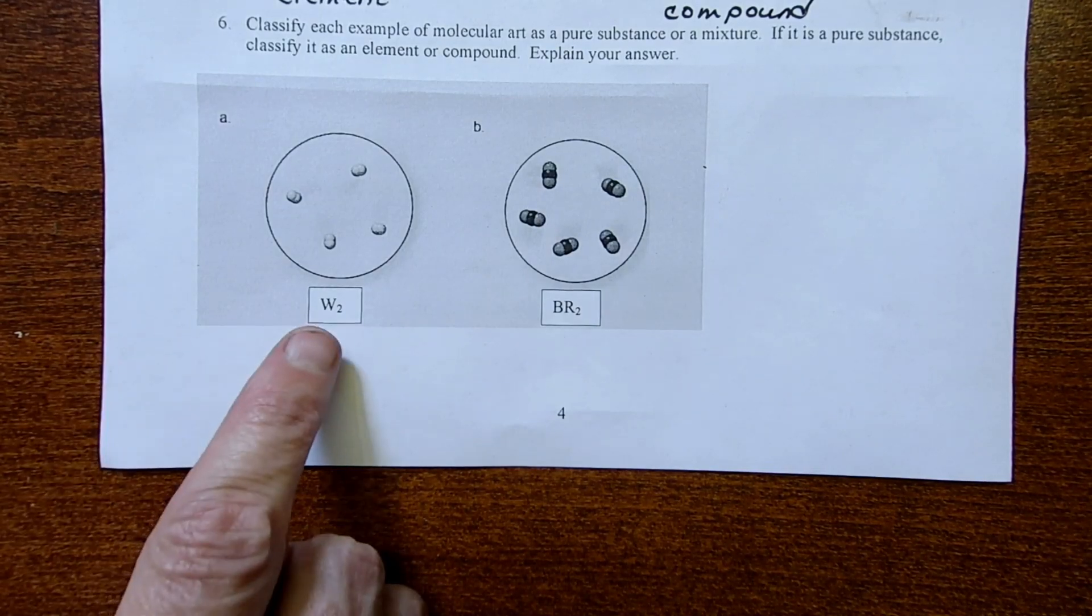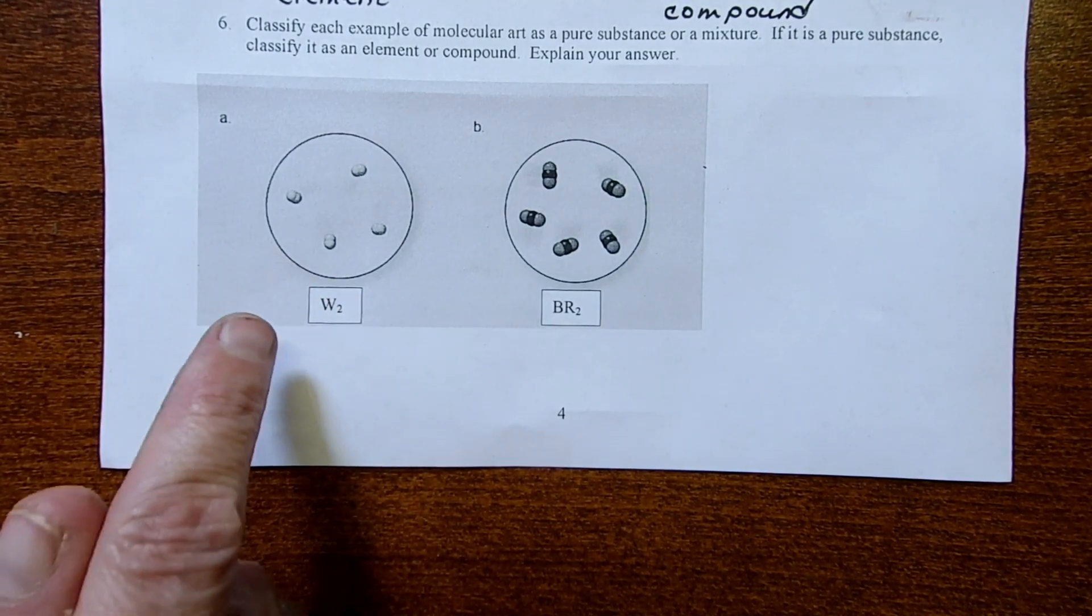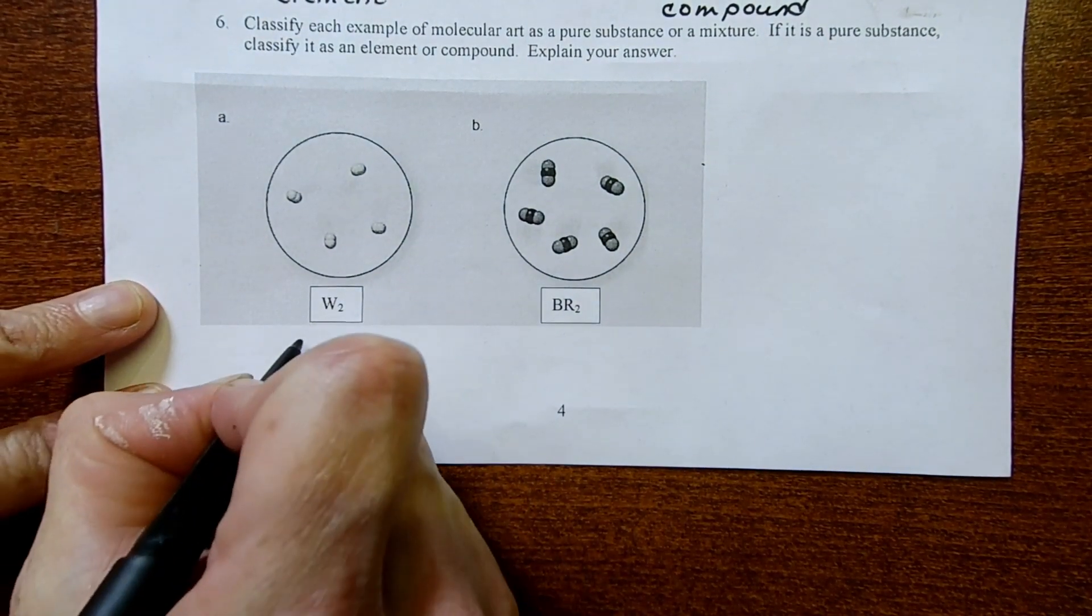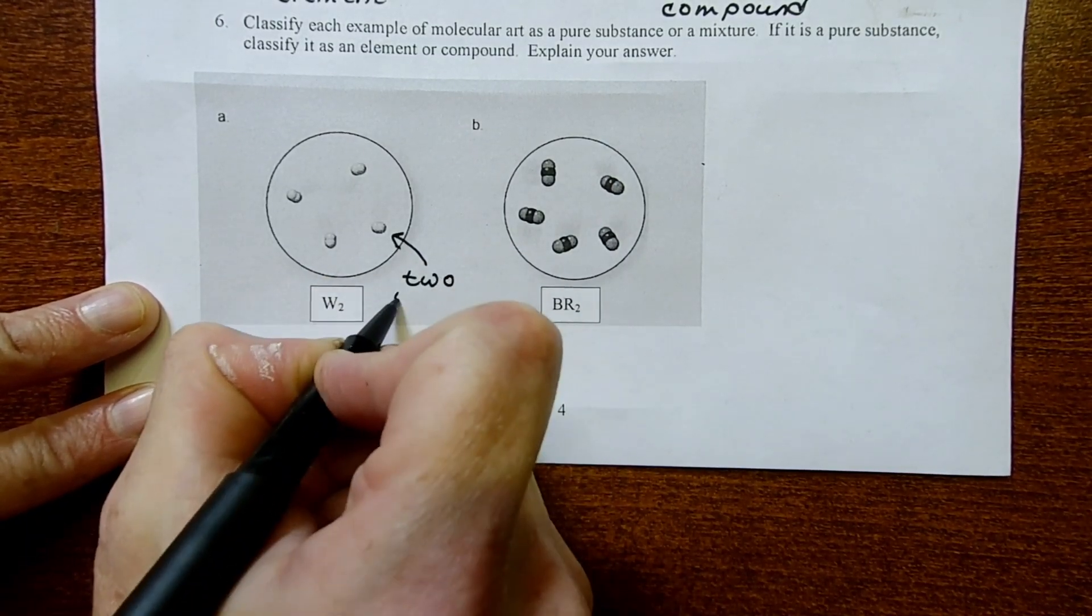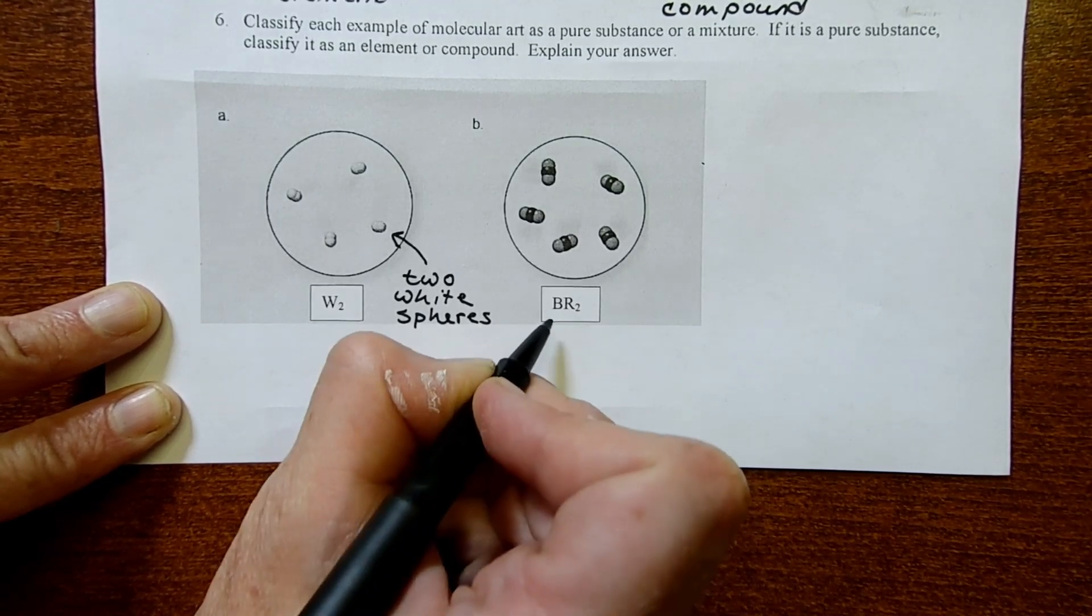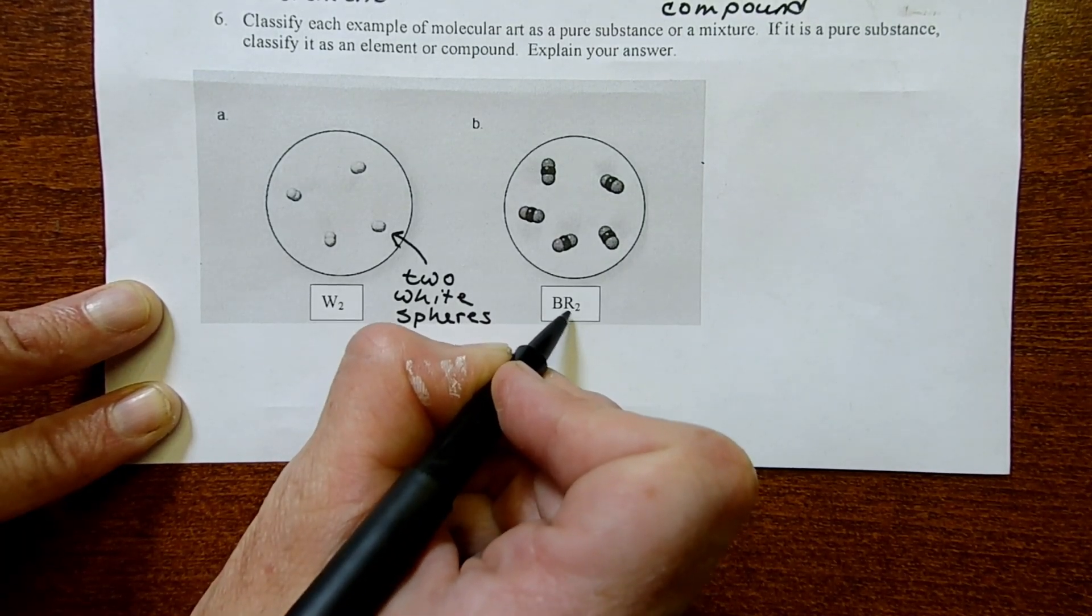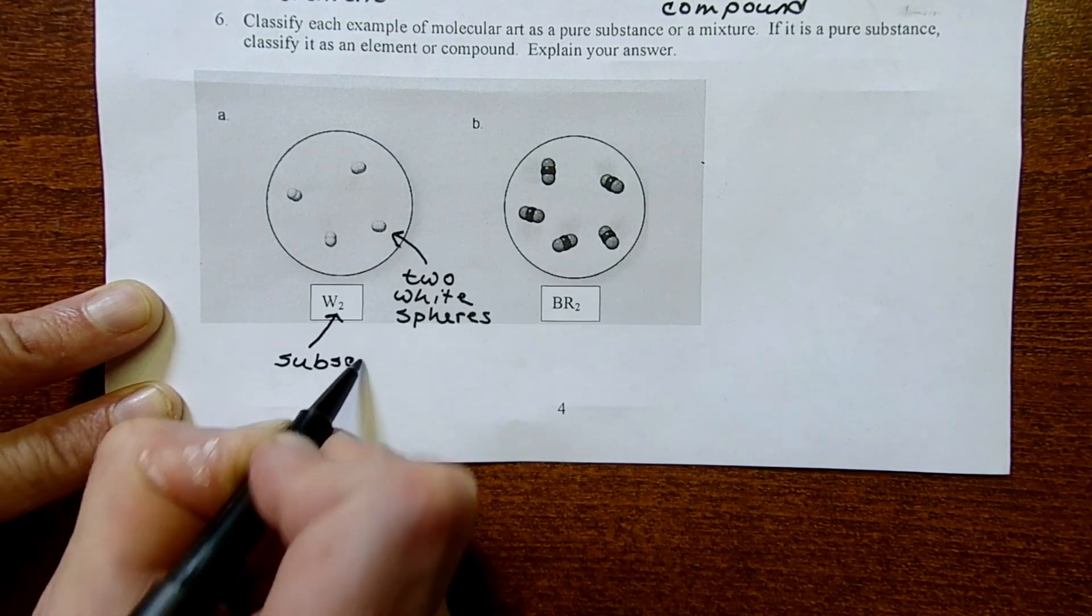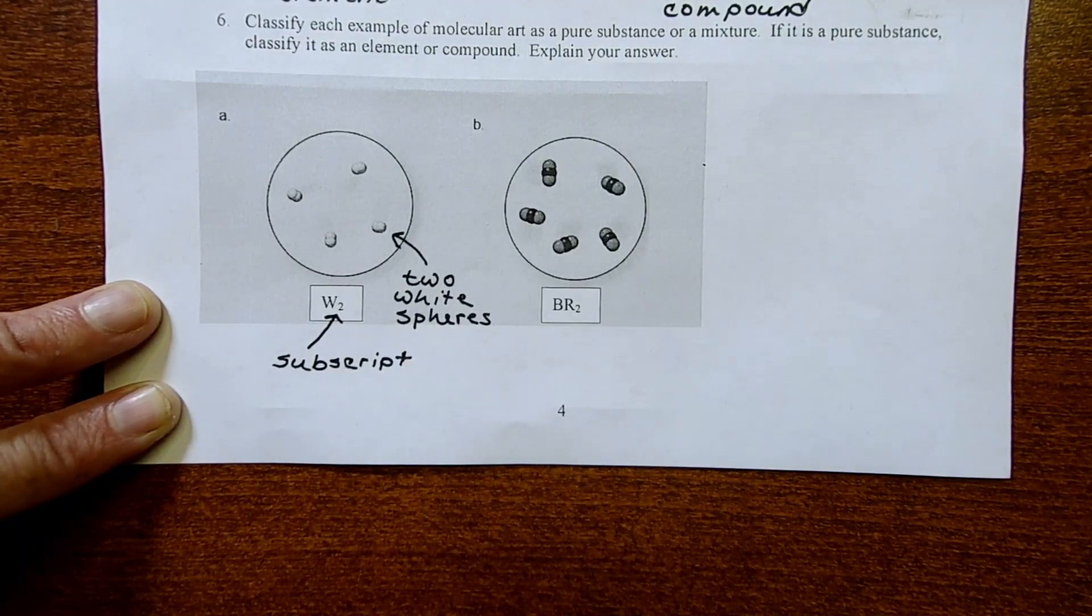For problem six, this W doesn't represent an element. Why I put that there is because a lot of times students will print out the lecture packets in black and white like I did. What I meant by W2 is to simply remind myself and students of the fact that we have two white spheres connected. The W standing for white. Likewise with Br2, we have one black sphere which represents one kind of element attached to two red spheres. The little two is called a subscript. That tells you how many of each element you're looking at. And again, these aren't element symbols. These are just the colors.